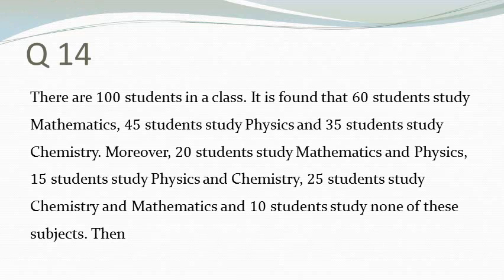Take a moment to read the question. There are 100 students in a class. 60 of them study mathematics, 45 study physics, and 35 study chemistry.